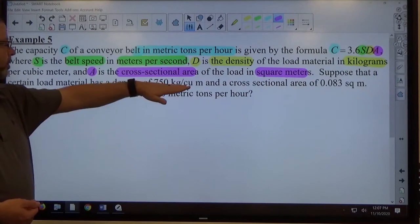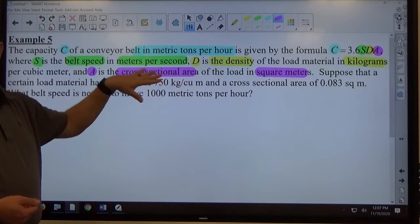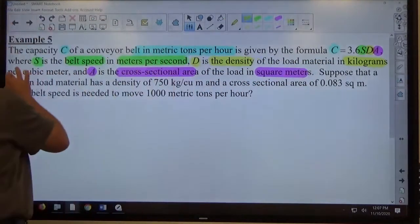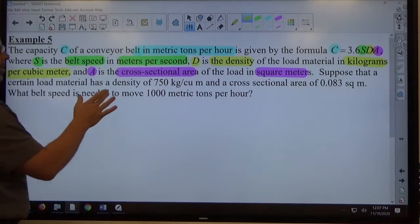They just said 750 kilograms per cubic meter, didn't say density, but then you say hey look, density's supposed to be in kilograms per cubic meter. Then you know this is a density.